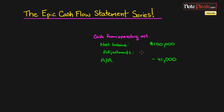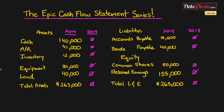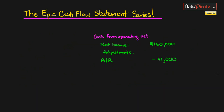The next step is we have to adjust for any other current assets. Looking at our balance sheet, we still have inventory as a current asset, so we're going to adjust for this one next. Inventory is $12,000 — it increased by $12,000 between 2013 and 2014. Let's go back to our cash flow statement and put inventory right here.